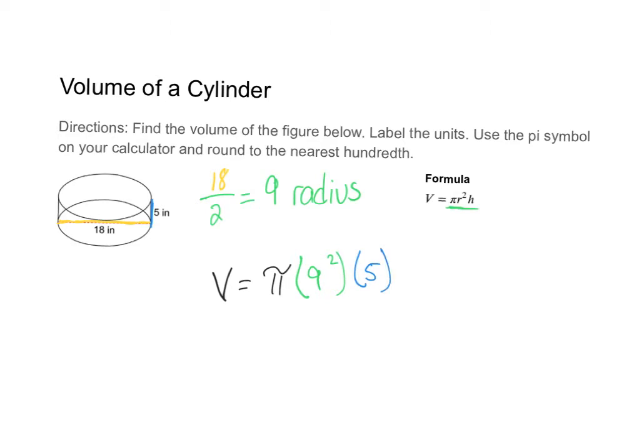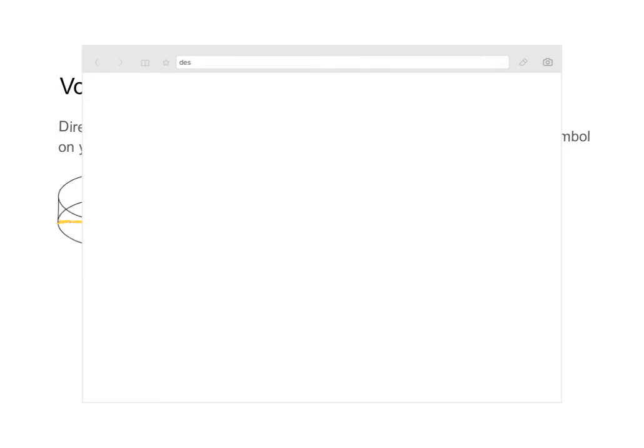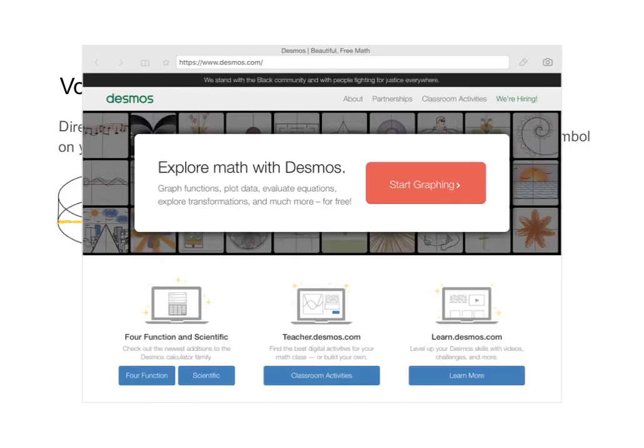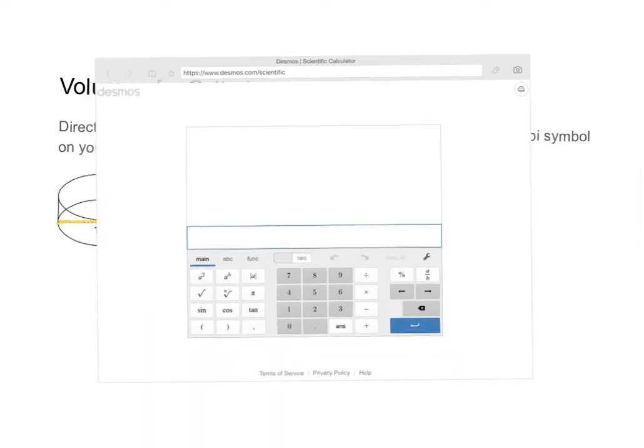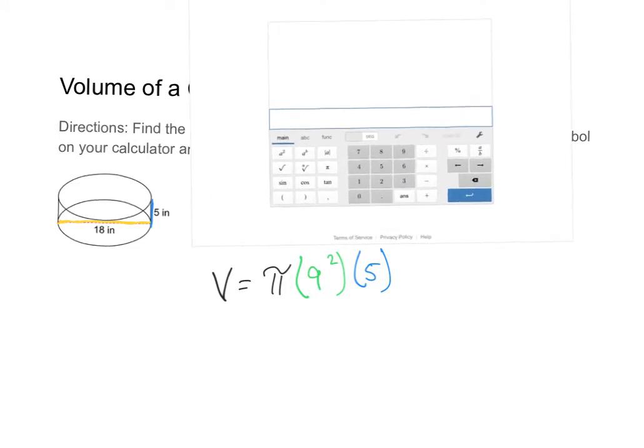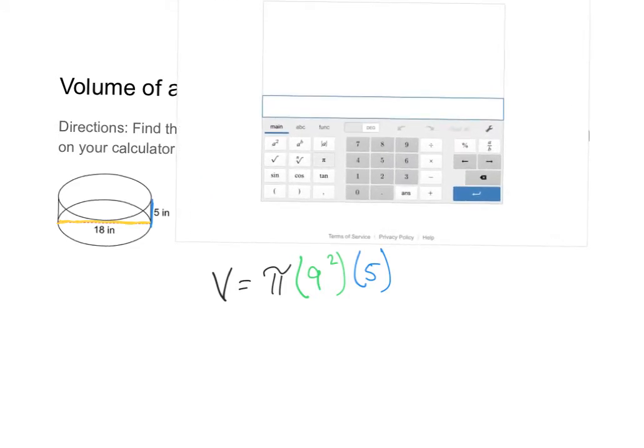Now I'm going to go to a Desmos calculator so I can show you how to put in the numbers and round appropriately. I'm going to take the pi symbol, I'm going to multiply, and then in parentheses I'm going to say 9 to the power of 2. Close parentheses and then multiply by 5 because the scientific calculator knows order of operations.